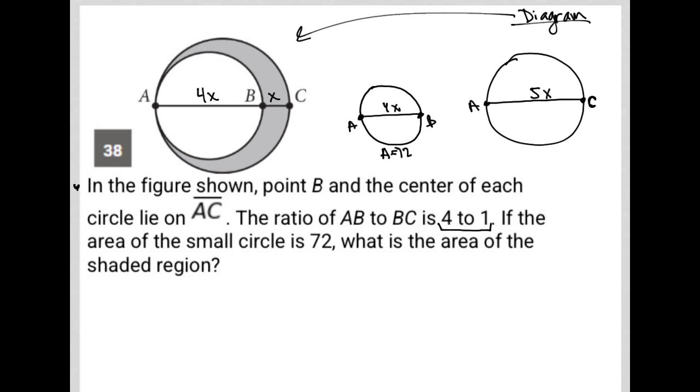Now, what can I do with that? Well, I know that the area, let me just go down here for more space. I know the area is equal to pi R squared. I know that my diameter for this small circle is 4X, which means my radius would be 2X. R equals 2X, right? Half of that 4X.